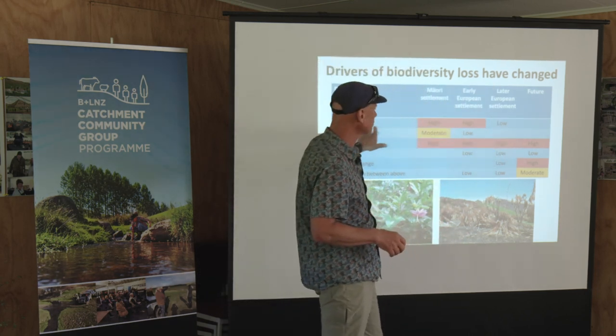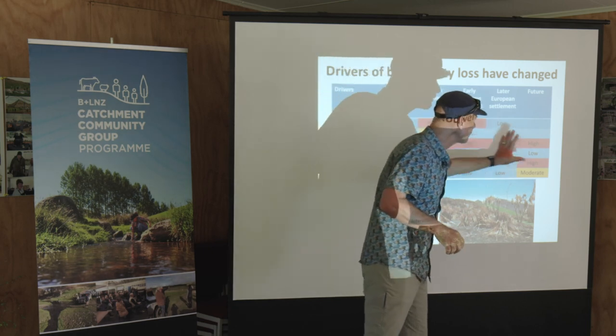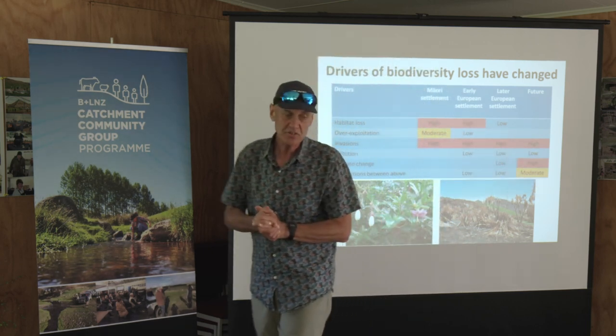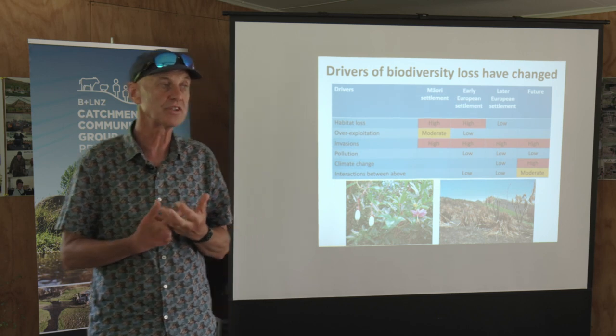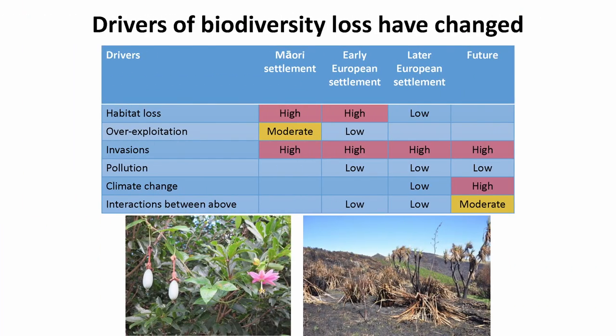As we move into the more recent period, habitat loss is really not that important. As we move into the future, invasive species are still the dominant driver of biodiversity decline — whether it's predators like mustelids, possums, ungulates, feral deer, goats, pigs, or invasive plants like wilding conifers. They're going to continue to be important. But climate change is the other factor that's really coming in, and the interactions that occur because of climate change.